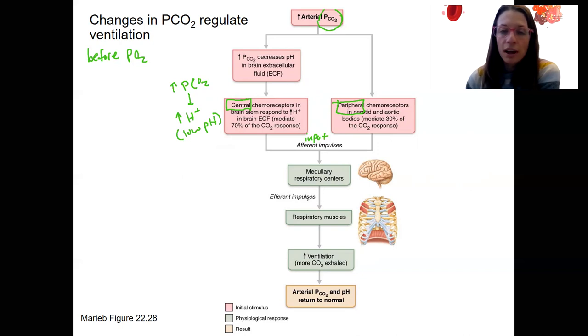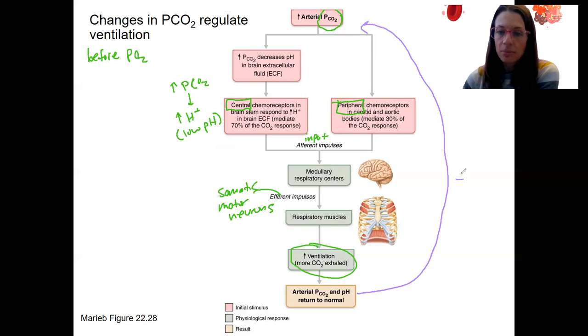They're then going to have efferent impulses. These are somatic motor neurons that are going to innervate these skeletal muscles. High PCO2 would result in increased ventilation, which means more CO2 being exhaled. That's going to bring us back to homeostasis in terms of lower PCO2 and higher pH. So we've got here negative feedback.